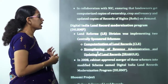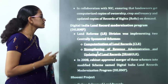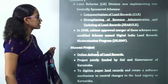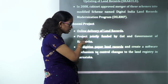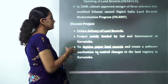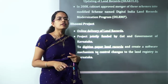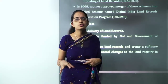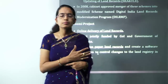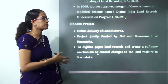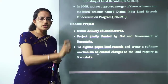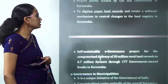The Digital India Land Record Modernization Program is an update of the previous scheme. It focuses on two things: computerizing all land records and strengthening revenue administration. The Bhoomi Project is a state project for online delivery of land records, funded jointly by the Government of India and the Government of Karnataka — similar to the Khajane project for online treasury.